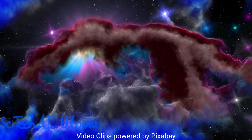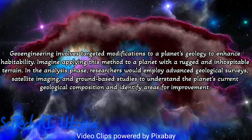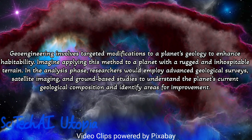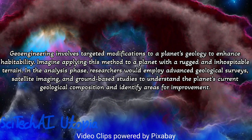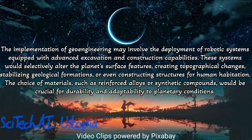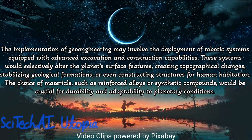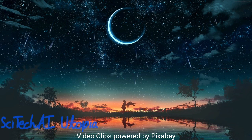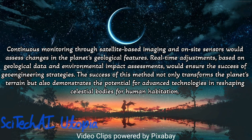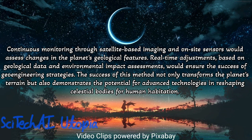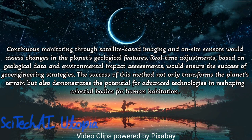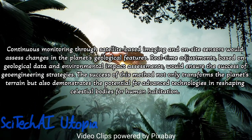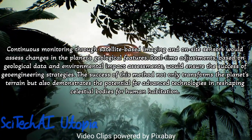Method 11: Geoengineering. Conduct an extensive survey of the planet's geological composition, including crust structure, mineral distribution, and tectonic activity. Develop a geoengineering strategy to modify the planet's geology involving processes such as controlled seismic activity, volcanic interventions, or the introduction of specific minerals. Implement advanced technologies capable of triggering controlled geological events, ensuring precision and predictability. Integrate real-time monitoring systems including seismic sensors and satellite observations to track changes in geological features and respond promptly to unexpected developments. Address potential ethical and environmental concerns through ethical frameworks and international cooperation in the decision-making process.